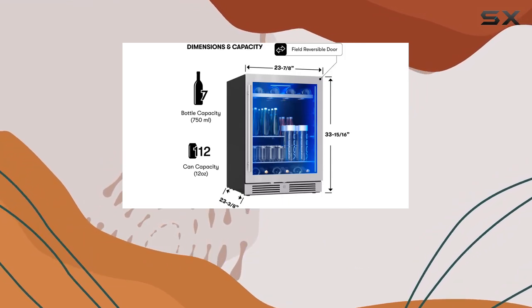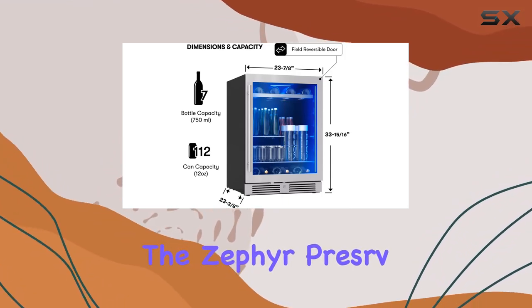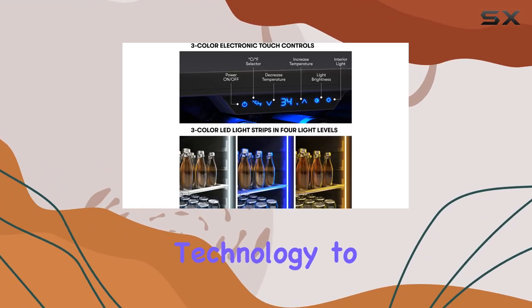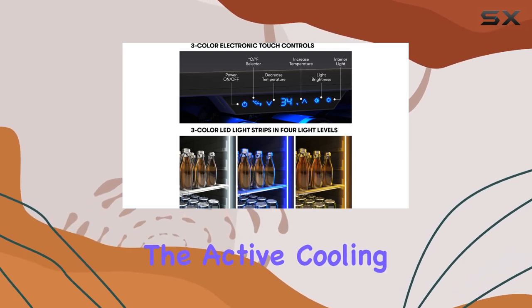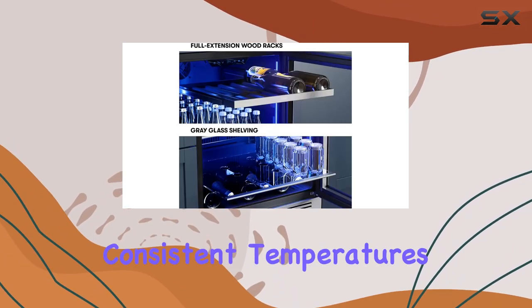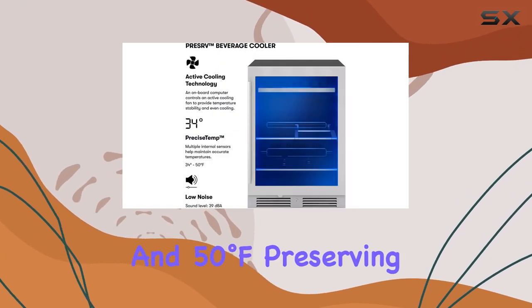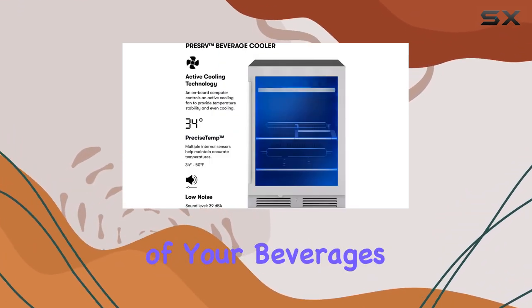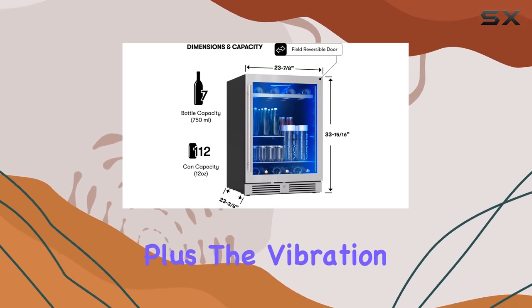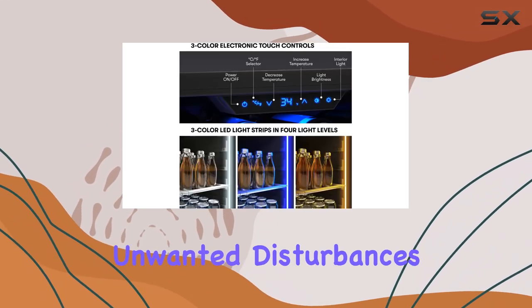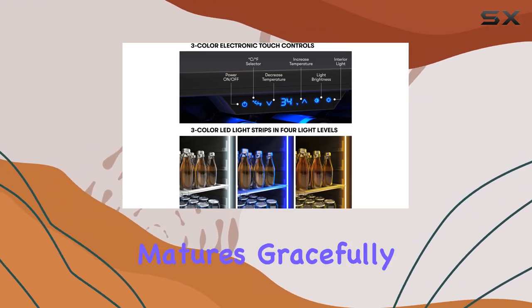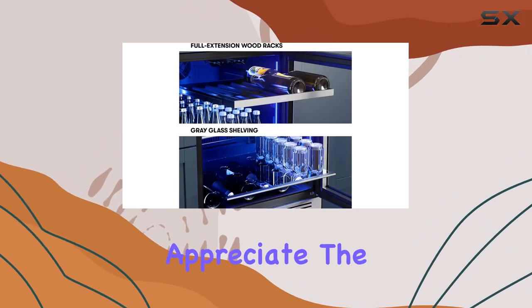But it's not just about looks. The Zephyr Presrv is equipped with advanced technology to ensure optimal performance. The active cooling system maintains consistent temperatures between 34 degrees Fahrenheit and 50 degrees Fahrenheit, preserving the quality of your beverages. Plus, the vibration dampening system protects your wine from any unwanted disturbances, ensuring it matures gracefully.